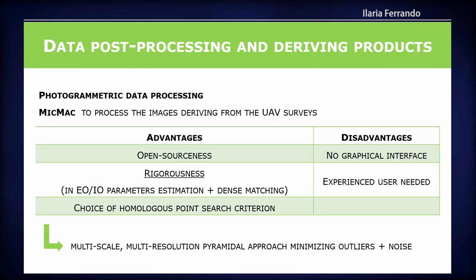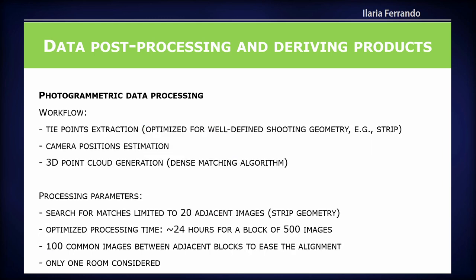Regarding the photogrammetry data processing, we used MicMac, a well-known open source software with advantages related to rigorousness — mainly in the external and internal orientation parameter estimation and in the dense matching algorithm — and also gives the user the possibility to choose the homologous point search criteria. It has some disadvantages, such as no graphical interface, requiring experienced users. The process uses a multi-scale multi-resolution approach, minimizing outliers and noise in the generated point clouds. The workflow involves extracting tie points, estimating camera positions, and generating the 3D point cloud through a dense matching algorithm.